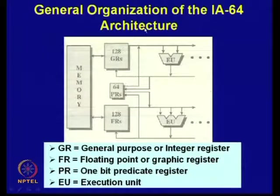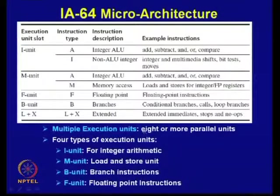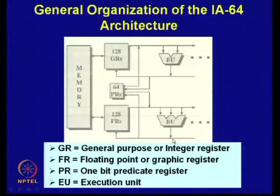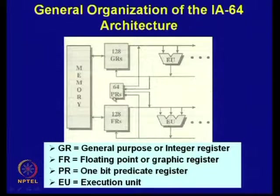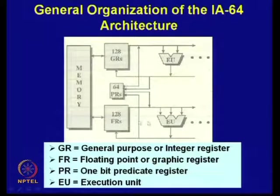Here is the general organization of the IA64 architecture. It has a large number of execution units — eight or more parallel units are available. Both fixed-point and floating-point execution units are shown, along with 128 general purpose integer registers, 128 floating point registers, and 64-bit predicate registers.